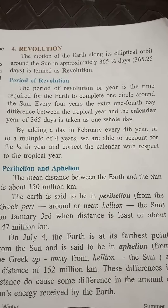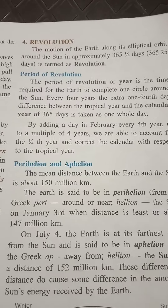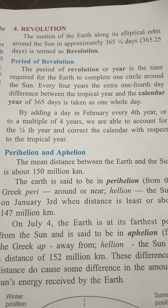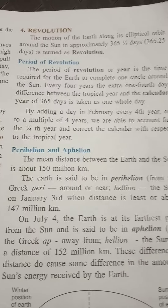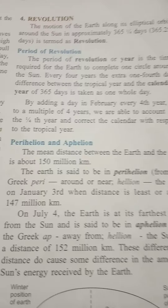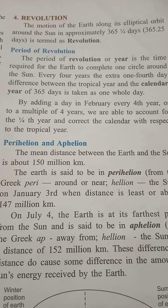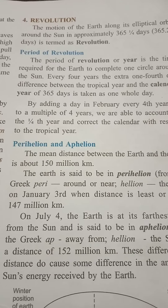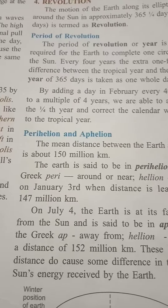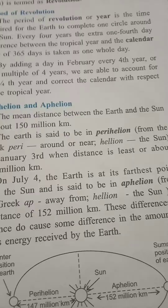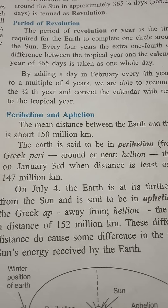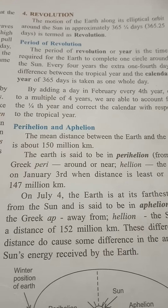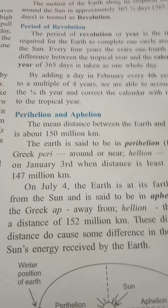Revolution is the motion of the earth along its elliptical orbit around the sun, taking approximately 365 and a quarter days — or 365.25 days. The period of revolution, or one year, is the time required for the earth to complete one circle around the sun. Every four years, the extra one-fourth day difference between the tropical year and the calendar year of 365 days is counted as one whole day, added to February every fourth year. That fourth year is known as a leap year.